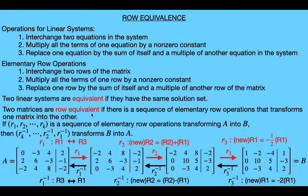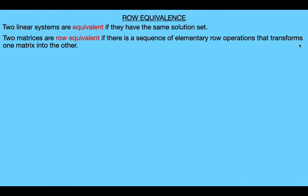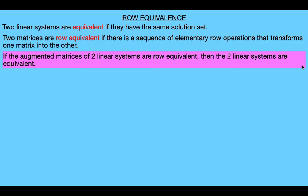So when thinking about two matrices being row equivalent, we won't ever have to worry about having a sequence that goes in one direction but not the other. If we can find a sequence transforming A into B, there's always a sequence transforming B into A. Now for the rest of the video, I want to focus on how the notion of row equivalence of matrices relates to the notion of equivalence of linear systems, because of an important statement that will eventually allow us to solve linear systems entirely in matrix notation.